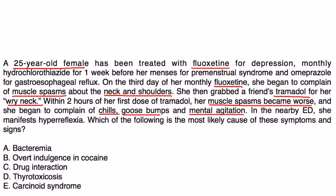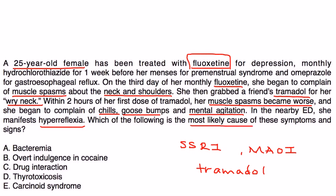Within two hours of her first dose of tramadol, her muscle spasms became worse and she began to complain of chills, goosebumps, and mental agitation. In the emergency department, she manifests hyperreflexia. In addition to SSRIs and MAOIs, there are other medications that can cause serotonin syndrome, and one of them is tramadol. That's what happened here. She had an interaction between these two medications. The answer is C, drug interaction.